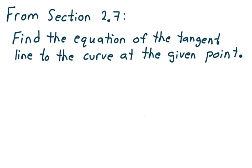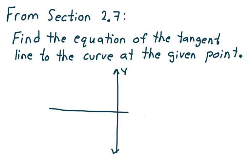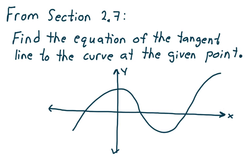This is a video from section 2.7. The directions say to find the equation of the tangent line to the curve at the given point. I want to draw a visual of what it is we are looking for. Suppose this is the y-axis and suppose this is the x-axis. Suppose I'm given the graph of y equals f of x, and I need to identify a point on the graph. Let's suppose the point is right here, and we're going to call that point AB.